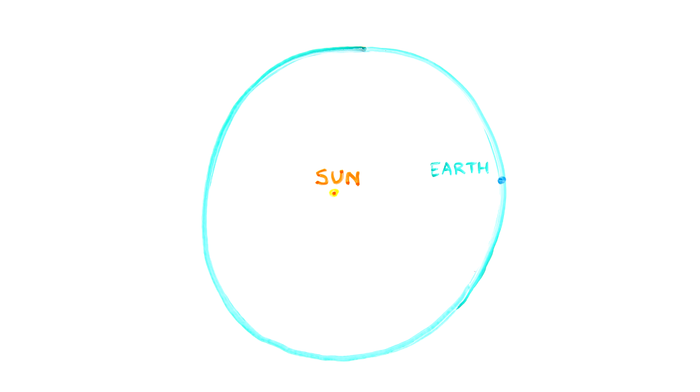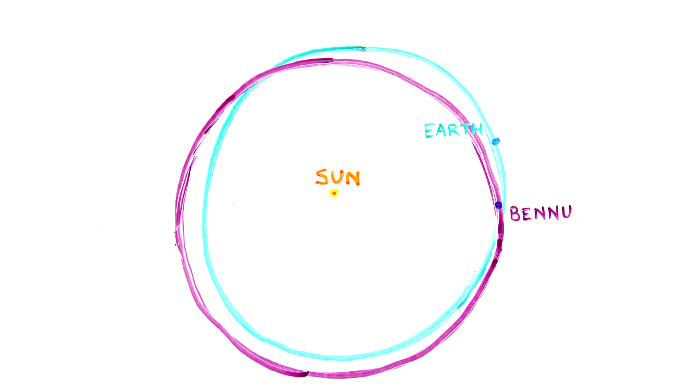After it escaped its family, Bennu's orbit changed until it became a near-Earth object. Bennu's orbit makes it a potentially hazardous asteroid, which could possibly threaten Earth one day.